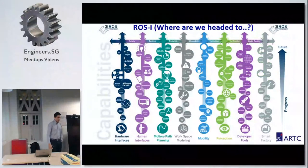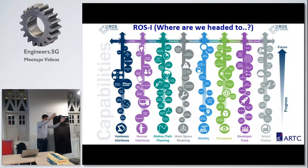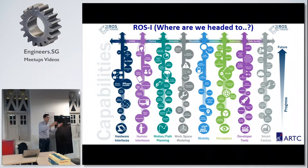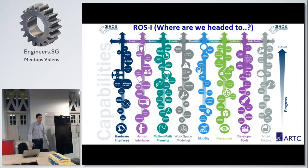I want to add a little bit more on the definition for ROS Industrial. I want to introduce you to what is a meta package, which is basically a massive package including definitions for KUKA robots, Fanuc robots, ABB robots, multiple robots, et cetera.